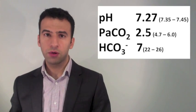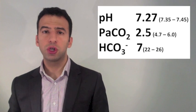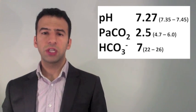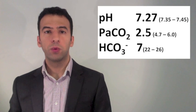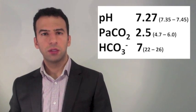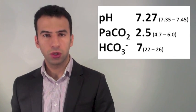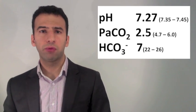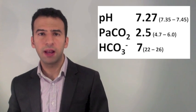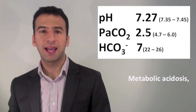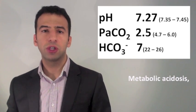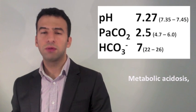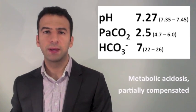Three more to go. pH is 7.27 — acidemia. Step 2: the CO2 is low, which is alkalinising. They're both moving in different directions, so this is probably a metabolic acidosis. In Step 3, the bicarbonate is low — very low — confirming this is a metabolic acidosis. The CO2 is low and alkalinising in the opposite direction of the pH, so there is some partial compensation here.